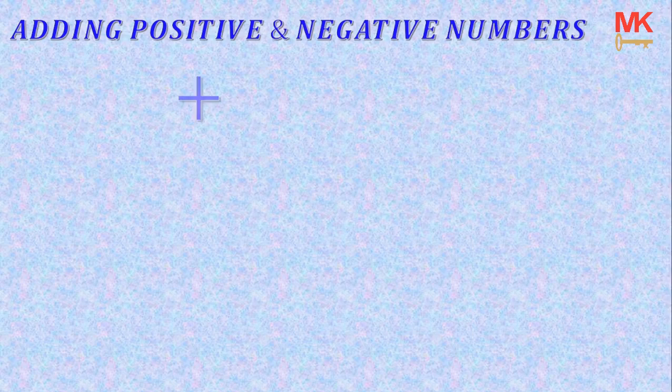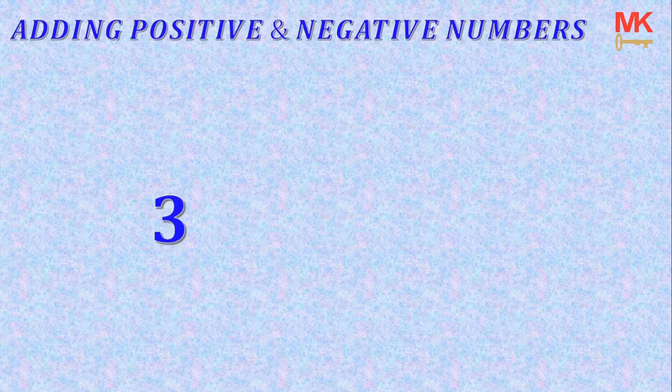Generally, a number can either be positive or negative. For instance, the number 3 is positive because it has an invisible plus sign right at the front. Similarly, the number minus 8 is negative because it has a minus sign at the front.